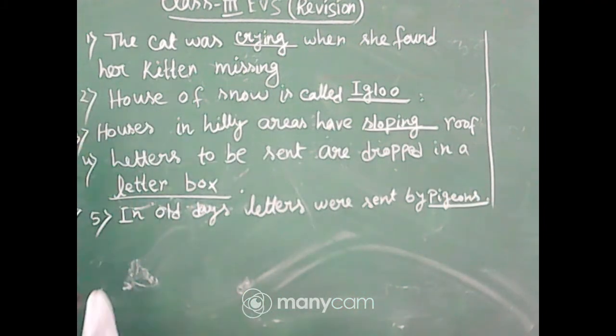Then I repeat again. The cat was crying when she found her kitten missing. House of snow, house of snow is called igloo. Houses in hilly areas have slopping roof.